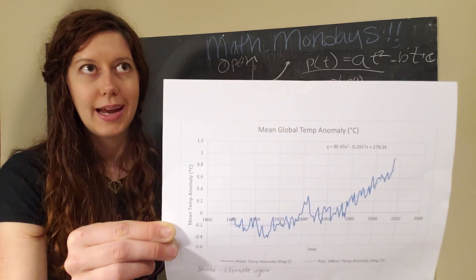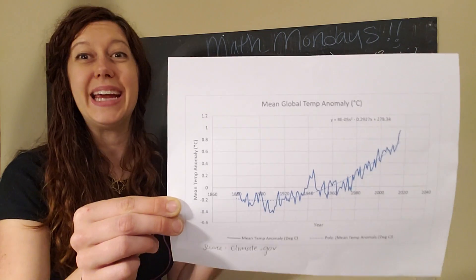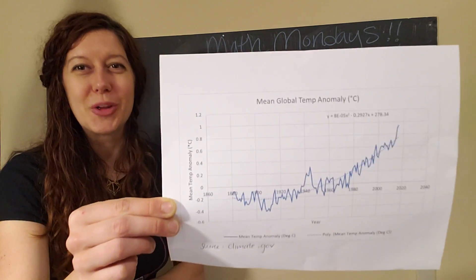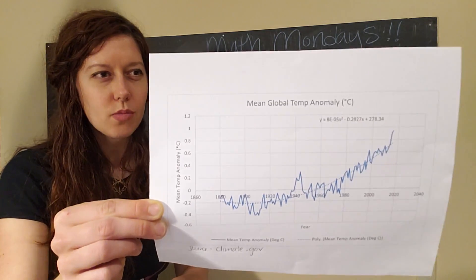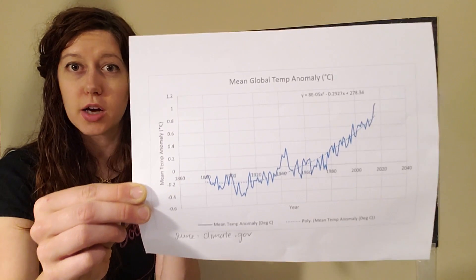It's basically a deviation from expected value. So for example, if in the summertime the average temperature in Seattle was 75 degrees, but last summer it was 85 degrees, then the anomaly would be 10 degrees. Okay, anyway, so this data set is from climate.gov. You can get it for free.